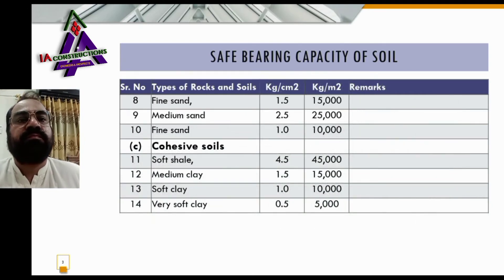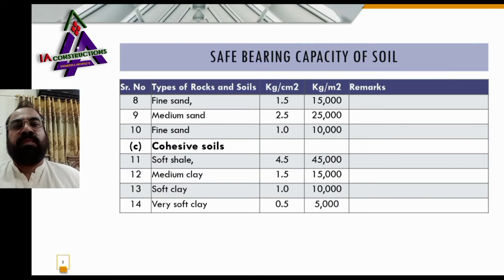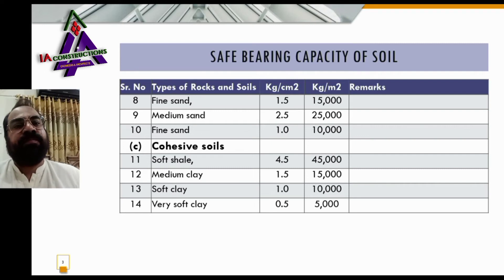Number eight: fine sand and silt — bearing capacity of 1.5 kg per centimeter square and 15,000 kg per meter square. Number nine: medium sand — bearing capacity of 2.5 kg per centimeter square and 25,000 kg per meter square.